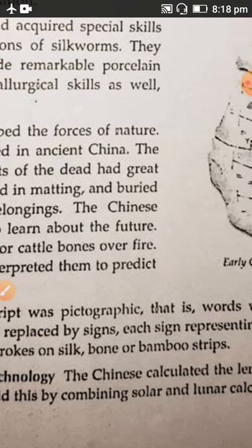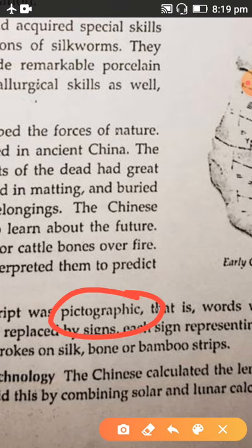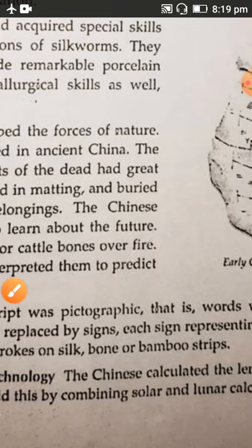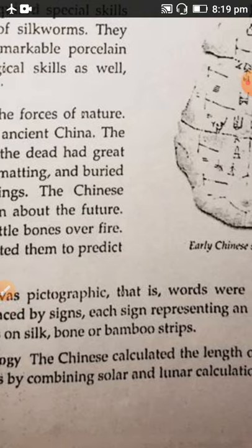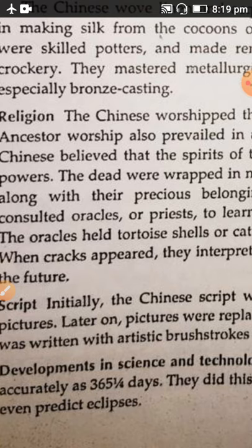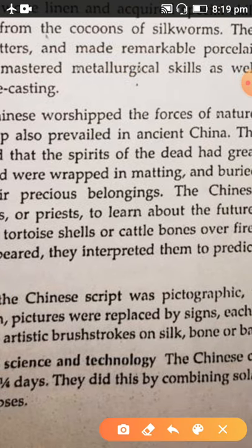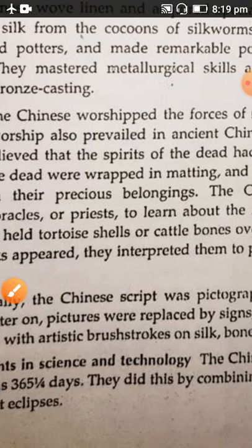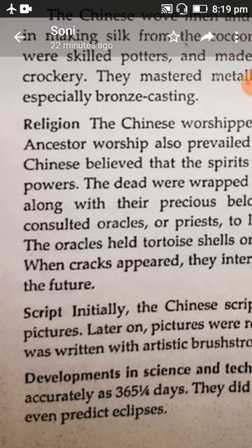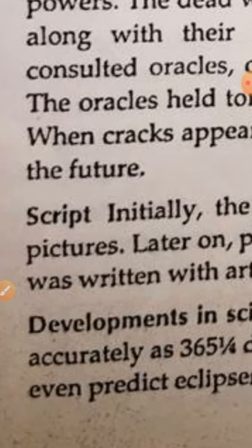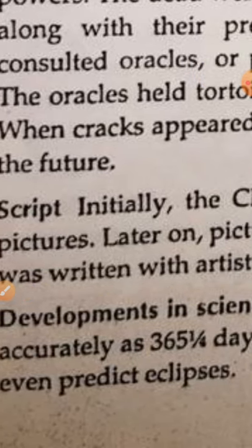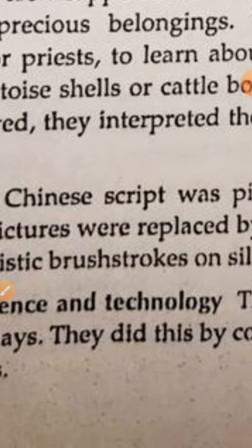The Chinese script was pictographic — words were represented by pictures. In science and technology, the Chinese calculated the length of the year very accurately as 365 and a half days, by combining solar and lunar calendars. They could even predict solar and lunar eclipses.